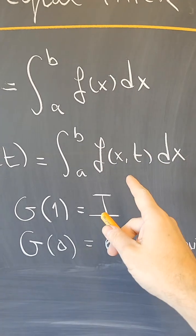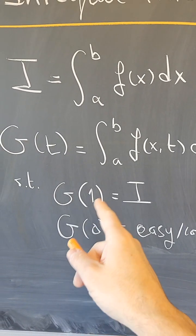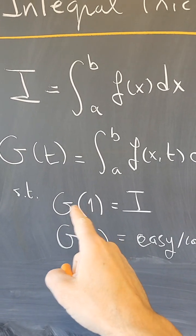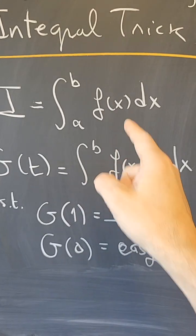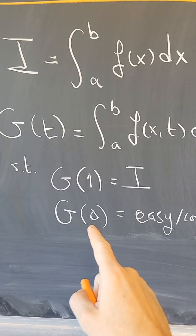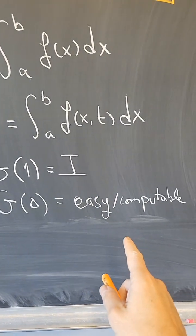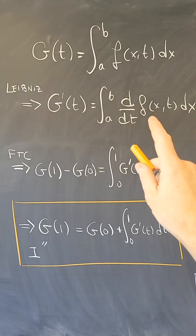This modification of f is done so that there is some value. Here I wrote 1, but it can be 2 or 3. g of 1 is the integral that I want to compute, while there is some other value, for example t equals 0, such that this integral becomes easy and computable.